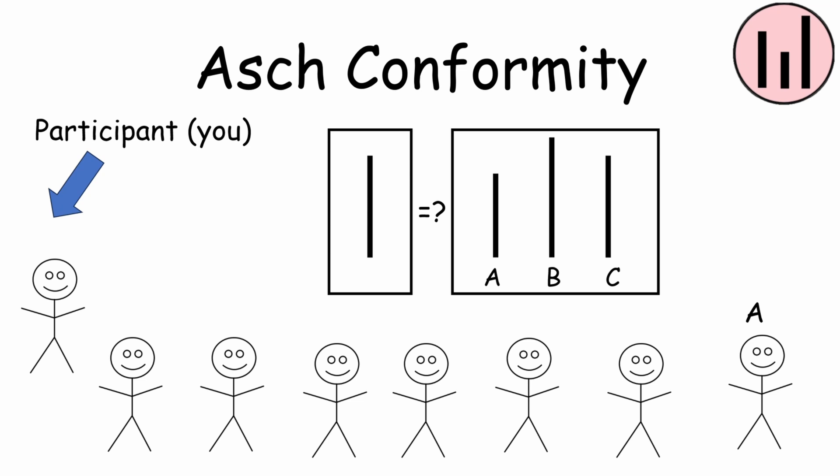First one says, line A. Second one, line A. Third, A. A, A, A, A, A. Now it's your turn. Look closely. What's your answer? Obviously C.